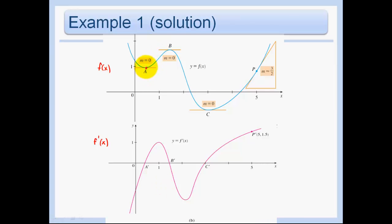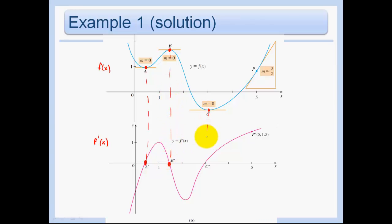I know that the derivative is 0 wherever I have horizontal tangent lines. So at these points here, this is why I like to draw it right below — I know that I have zeros on my graph of f prime. Basically if I were to draw on a number line, we know at the points a, b, and c we have zeros.